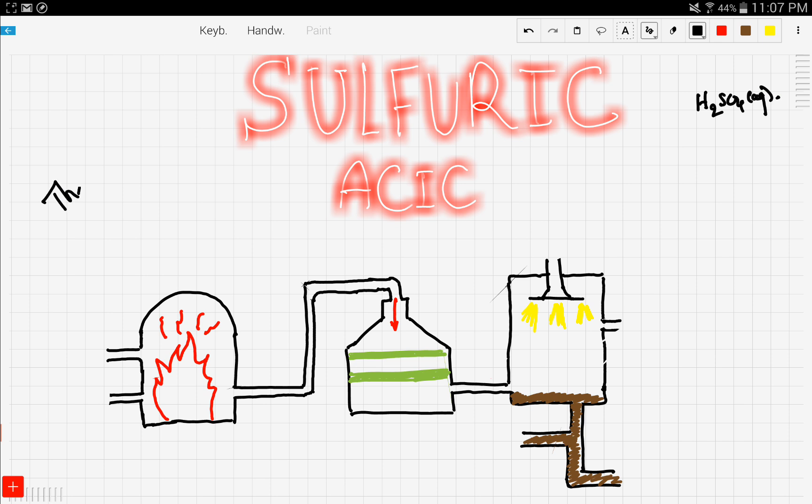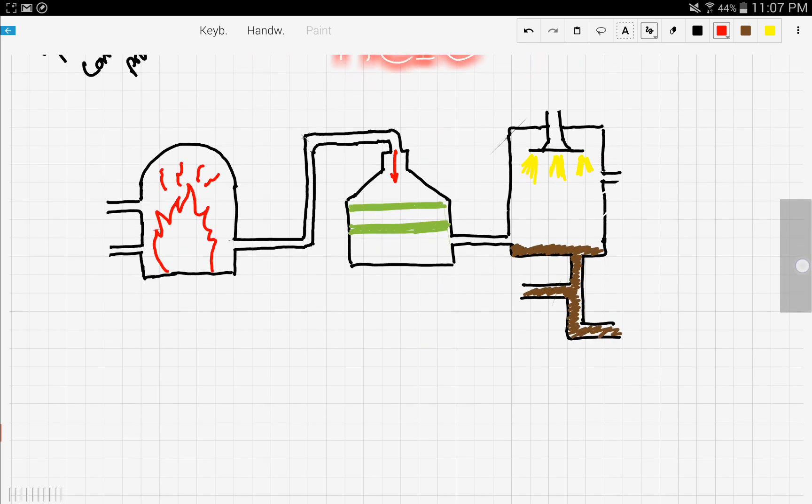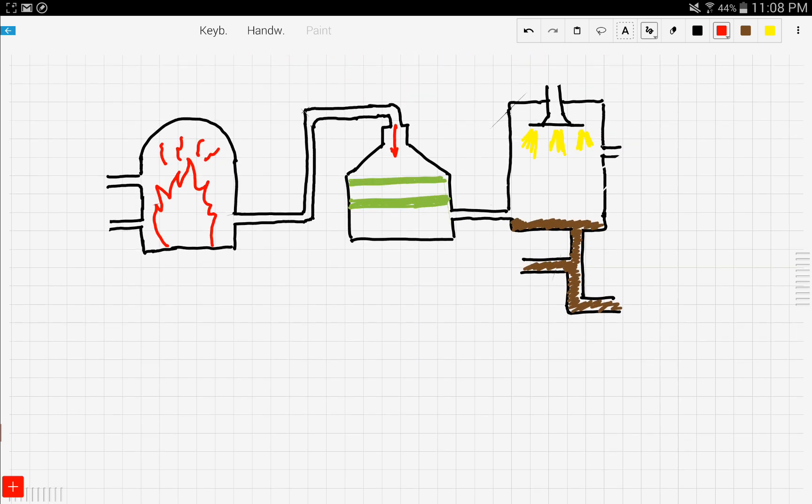Now we're going to walk through the details of this process and how sulfuric acid is made. Let's take a look at this diagram. First, sulfur solid is passed through here, which is a furnace, along with some dry air. This mixture is heated and sulfur dioxide is produced with some oxygen.